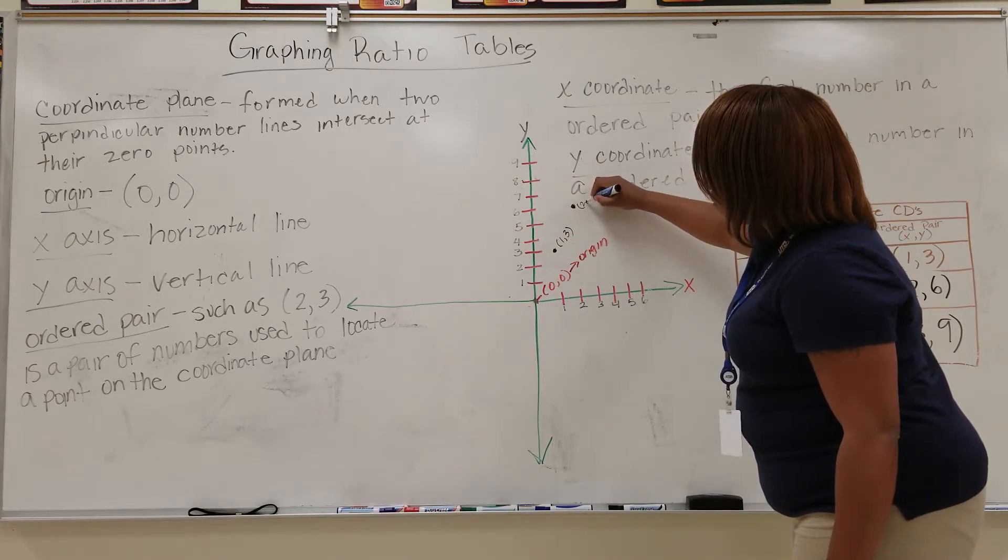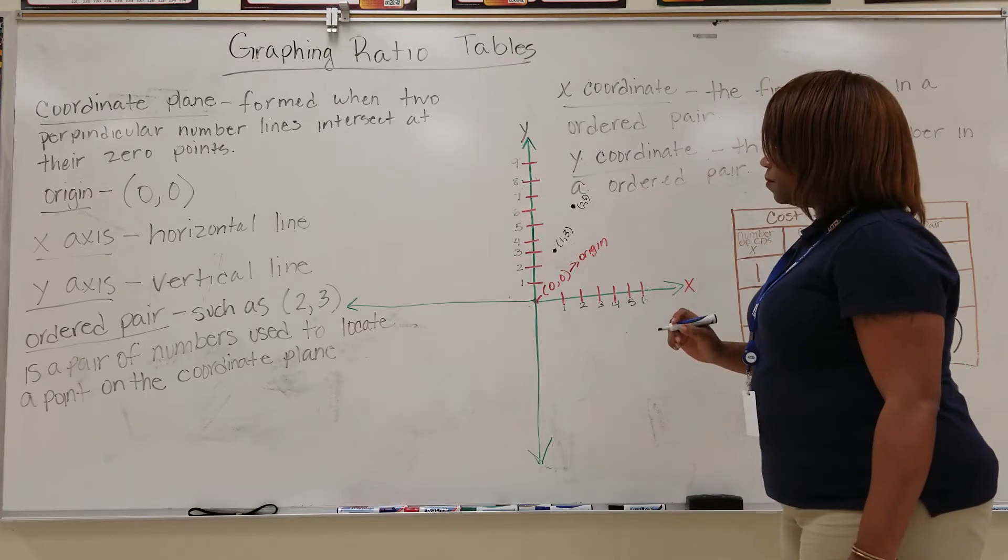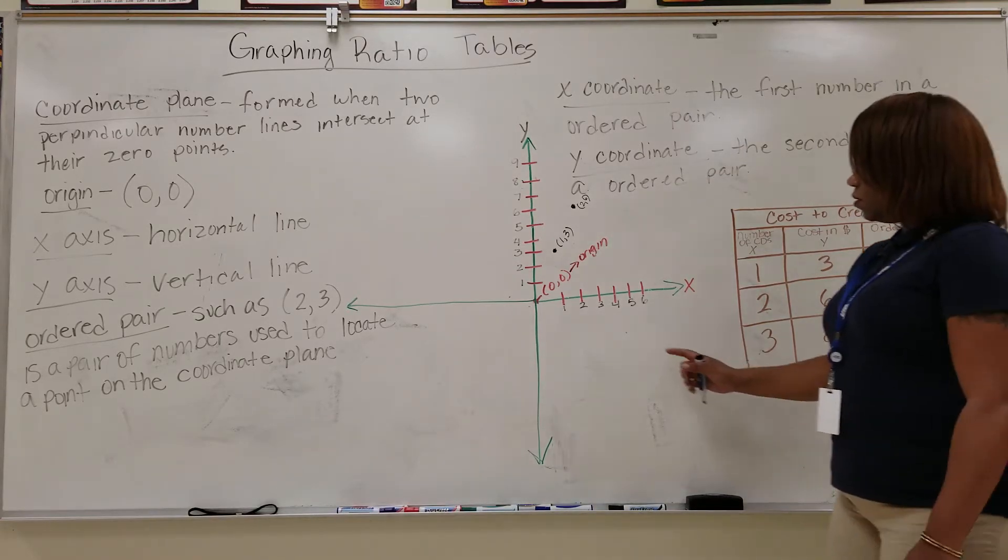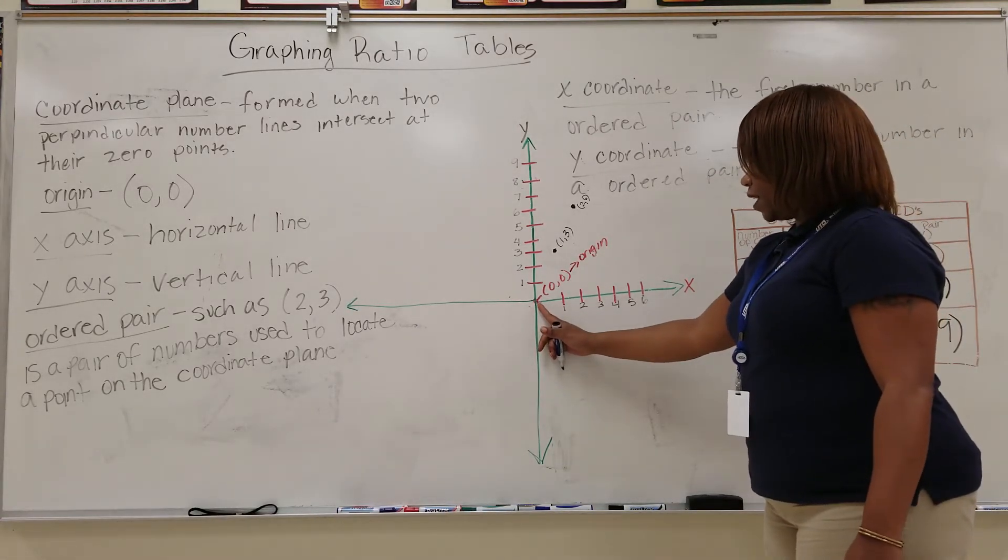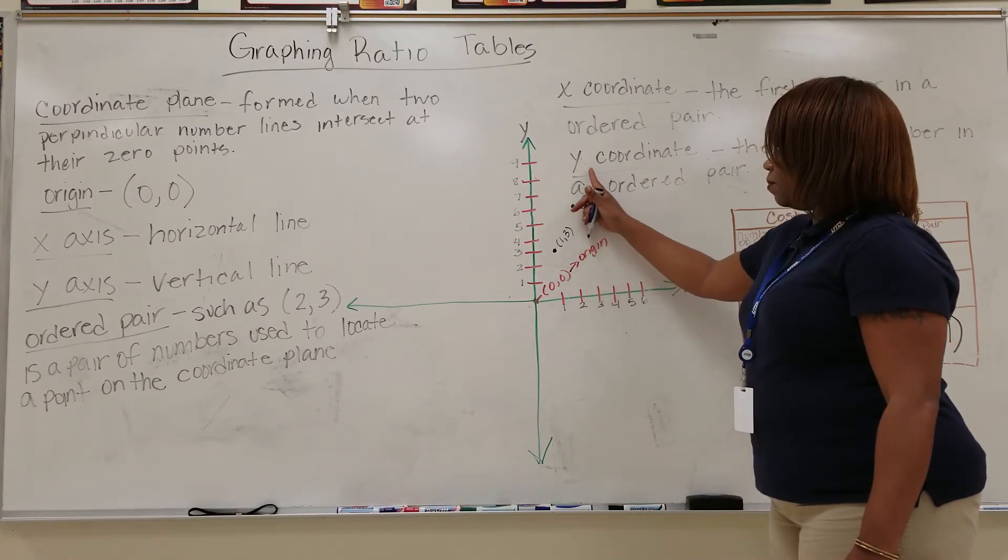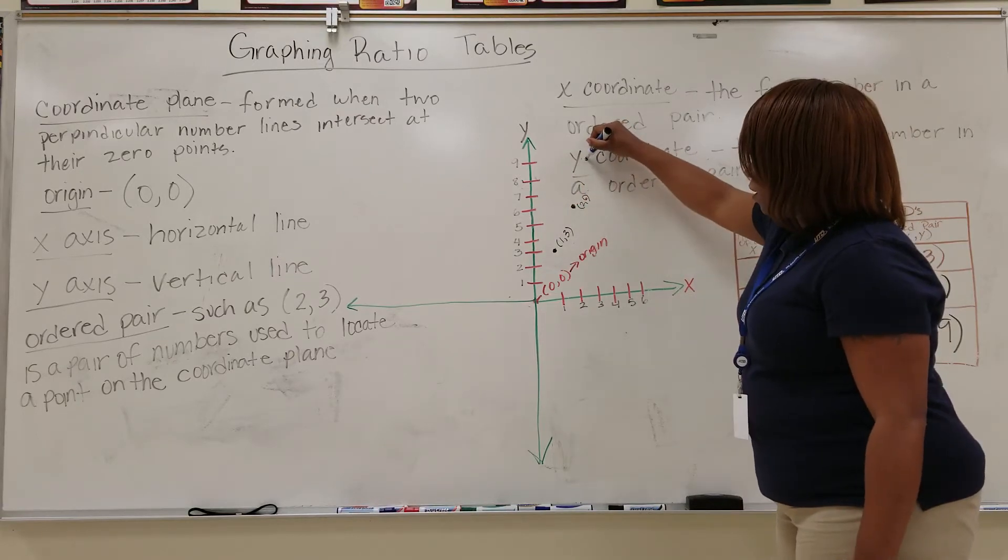And then we label (2, 6). And we do the same for (3, 9): three x-axis, nine is the y-coordinate on the y-axis. So on the x-axis we look for three right here, and then we go up nine spaces right here.